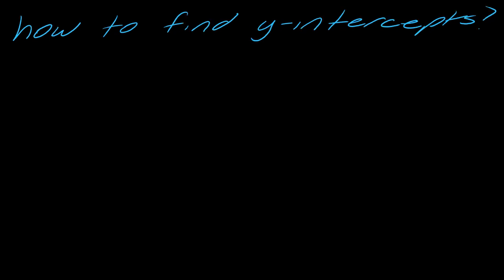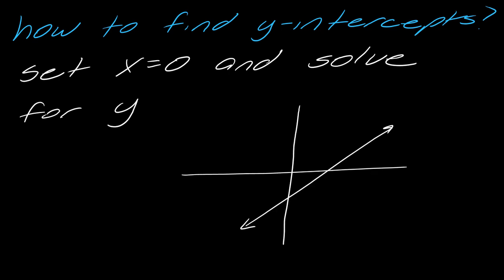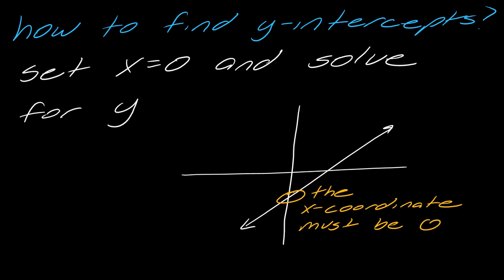Now if I pivot to the y-intercepts, very similar directions. In this case, set x equal to zero and solve for y. If you look at the graph and think about how this all lines up — if you look at the y-intercept right there, it makes sense. The x-coordinate has to be zero if we're on the y-axis. So this is just a little hack you can use if you ever forget how to do this.